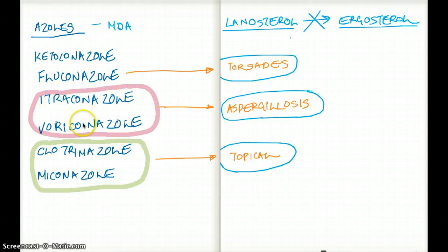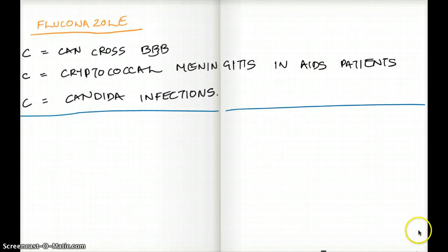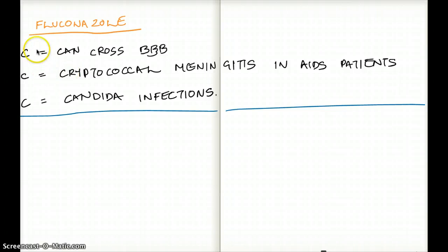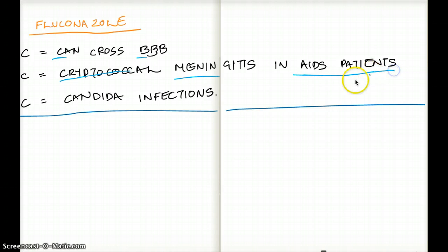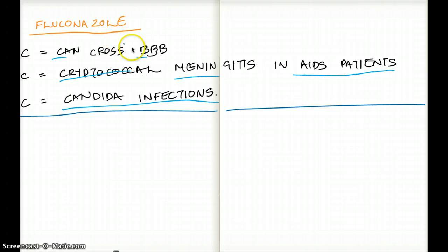I will be talking about fluconazole first. The way I remember fluconazole is by the three Cs. The first C is that it can cross the blood-brain barrier. The second C is that it's used for cryptococcal meningitis in AIDS patients. And the third C is that it's used for candida infections.